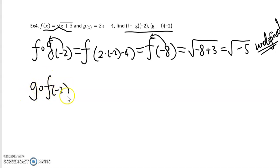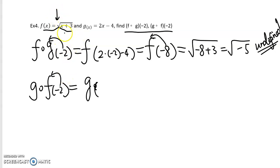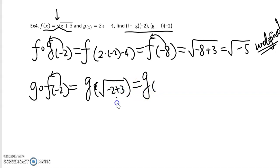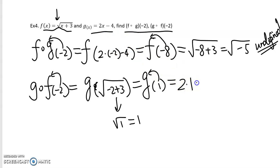Now let's find g∘f(−2). Because f is associated with negative 2 in g∘f, we plug negative 2 into the f function first, keeping g. The f function is the radical, so we replace x with negative 2: square root of (negative 2 + 3) = square root of 1 = 1. Now we plug 1 into the g function, replacing variable x with 1: 2 times 1 minus 4 = 2 minus 4 = negative 2. So the final answer is negative 2.